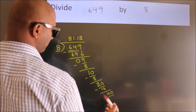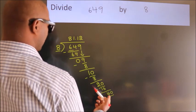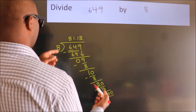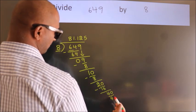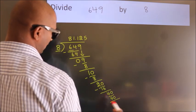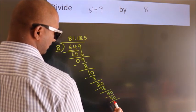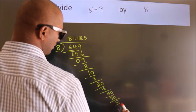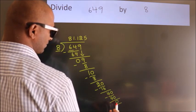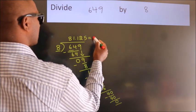So 40. When do we get 40 in the 8 table? 8 times 5 equals 40. Now we subtract and get zero. We got remainder zero, so this is our quotient.